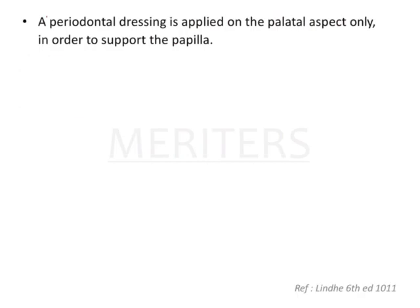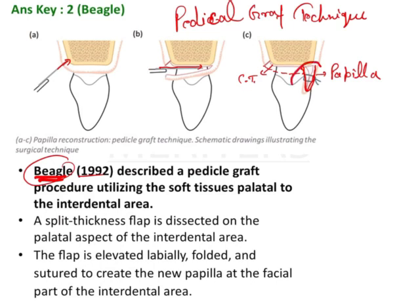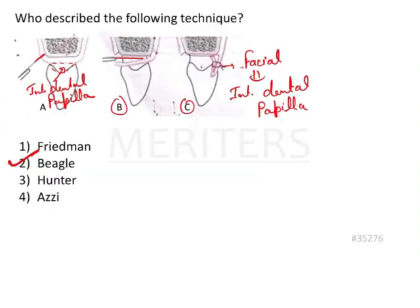One more thing to add: there should be use of a periodontal dressing, generally done to support the papilla. Whatever pedicle you have created — the artificial papilla or reconstruction — needs initial support, which is provided by the periodontal dressing. So the answer is Beagle. This is a papilla reconstruction technique, specifically a pedicle graft technique.